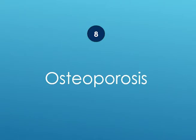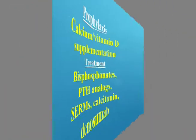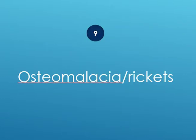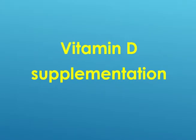Osteoporosis treatment: for prophylaxis, use calcium and vitamin D supplementation. For treatment, use bisphosphonates, PTH analogs, selective estrogen receptor modulators (SERMs) such as tamoxifen, calcitonin, and denosumab. Osteomalacia or rickets: vitamin D supplementation.